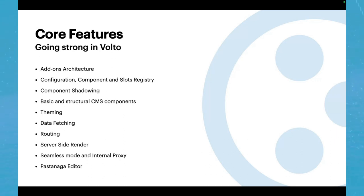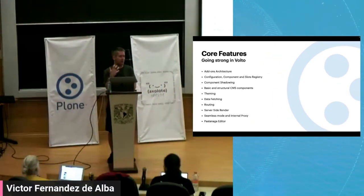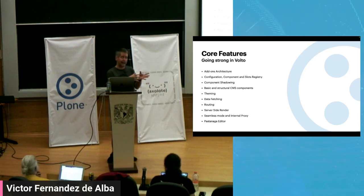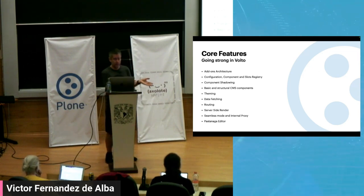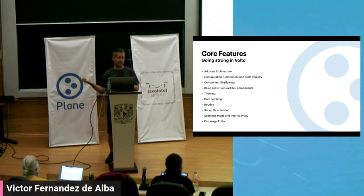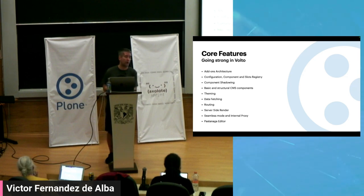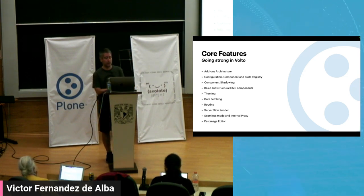I know no other framework that does extensibility the way we do, and this is key to Plum and Volto. We thought it would be very valuable to extract it, as well as the configuration, component and slots registry, and component shadowing. We have this ability to modify a module — a part of the code — and provide another component that overlies on top of the original. This new component takes over. We have this in the ZCCA architecture in the backend, but we also ported this concept to Volto.